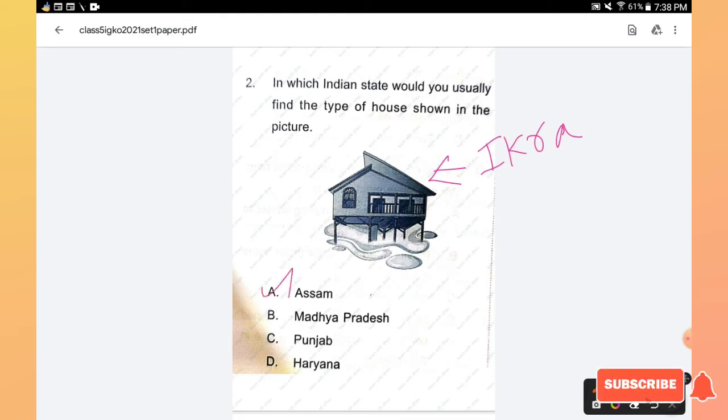Options are Assam, Madhya Pradesh, Punjab, or Haryana. These types of houses can usually be found in the state Assam. Why? Because the state Assam receives plenty of rainfall so there might be a chance of getting a flood and water might get inside into the houses.